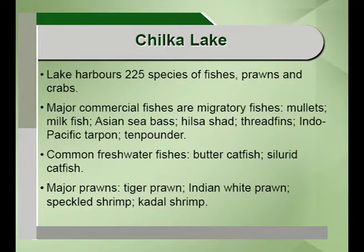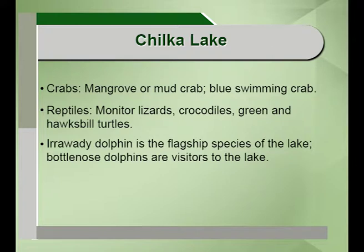Chilika Lake alone harbors 225 species of fishes, prawns and crabs. The major commercial migratory fishes include mullets, milkfish, Asian sea bass, hilsa, thread fin, Indo-Pacific tarpon, and the ten pounder. Common freshwater fishes include the butter catfish and silurid catfish. Major prawns include the tiger prawn, Indian white prawn, speckled shrimp and kadal shrimp. The crabs include the mud crab or mangrove crab, and the blue swimming crab. Reptiles include monitor lizards, crocodiles, and green and hawksbill turtles.